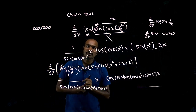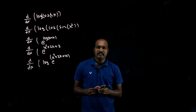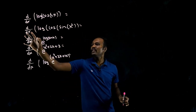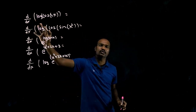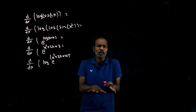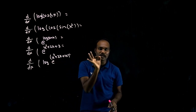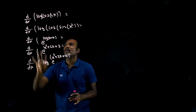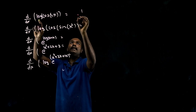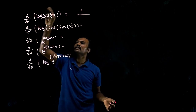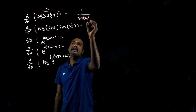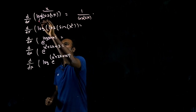We will solve some more questions. First you try — don't watch the video yet. Pause the video, take pen and paper, and try the questions. Then watch this part. Coming from left to right: I see log. Log x differentiation is 1/x. x means whatever is inside, so 1 by cos 2x. Times. Log is done.